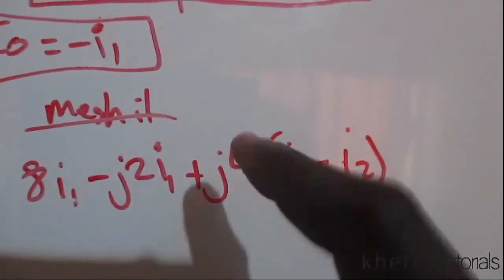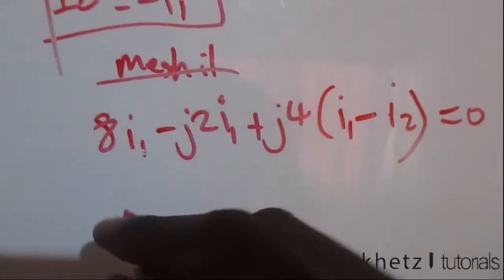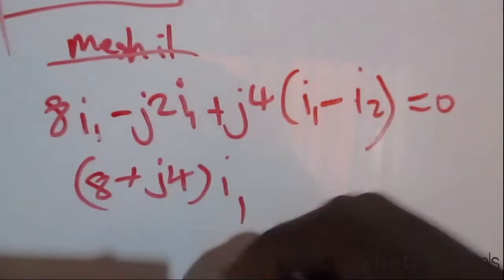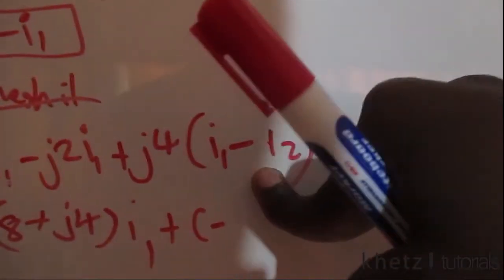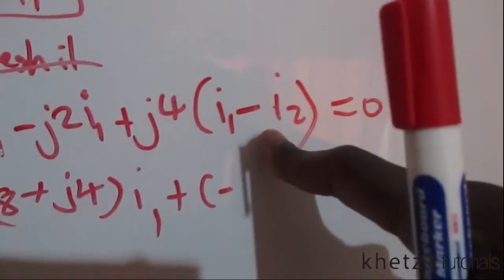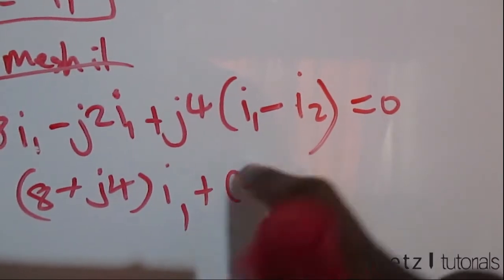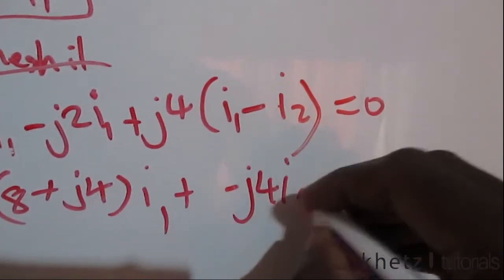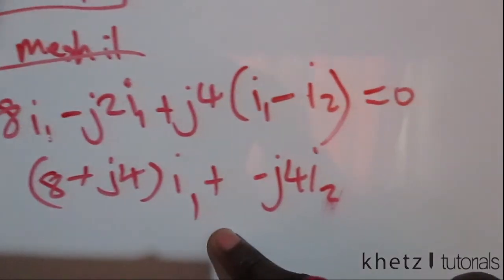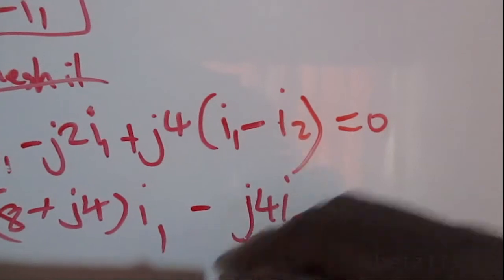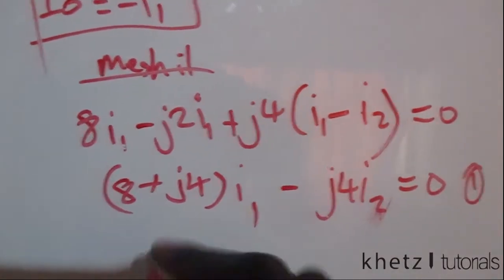We have three elements in our mesh giving three terms — that checks out. Simplifying by grouping I1 terms: we get (8 + j2)·I1. Then the term associated with I2 is negative j4·I2. The full first mesh equation is: (8 + j2)·I1 − j4·I2 = 0.